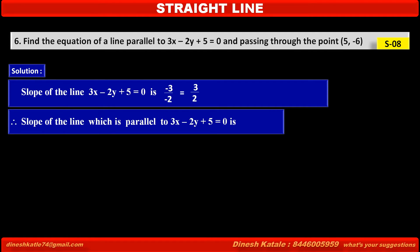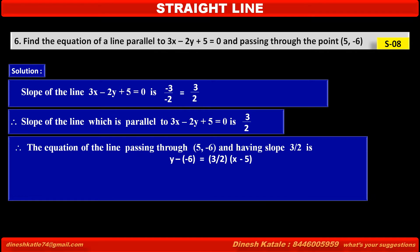Therefore, the slope of the line which is parallel to 3x - 2y + 5 = 0 is 3/2. As we know, if the lines are parallel, their slopes are equal.